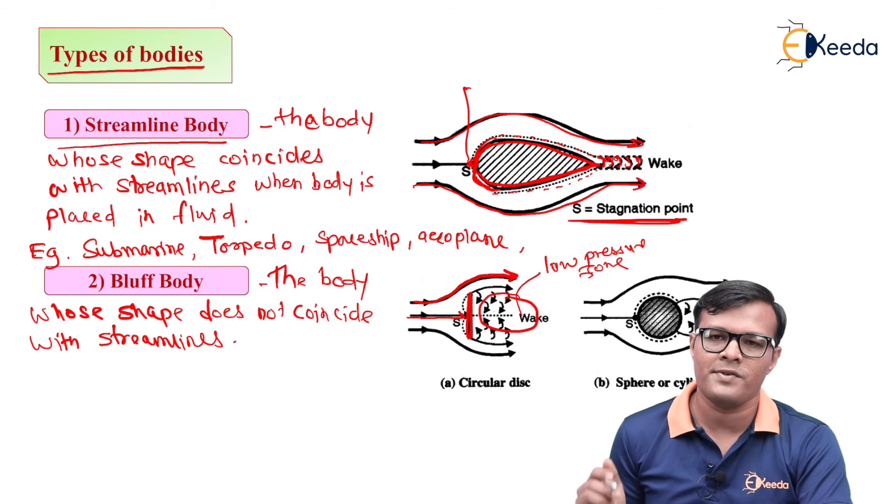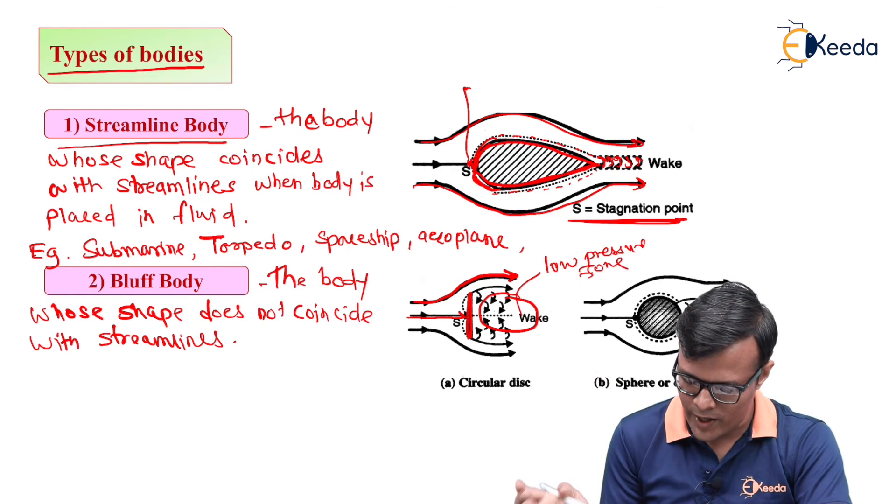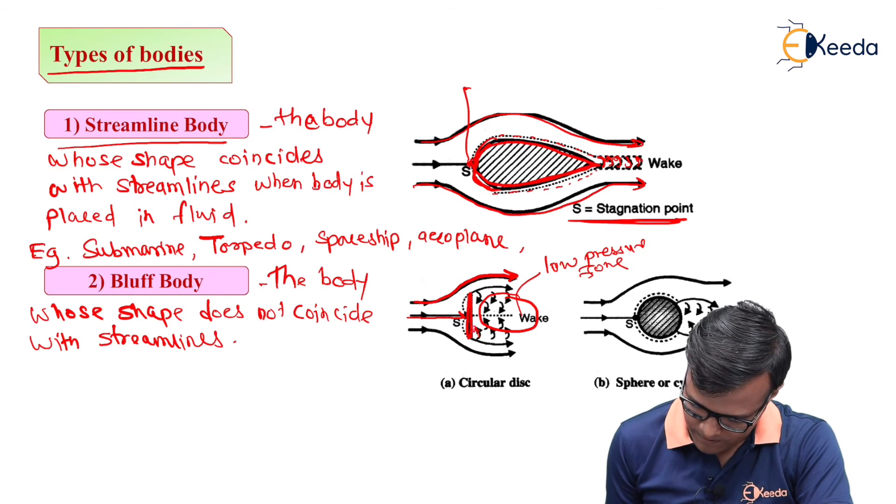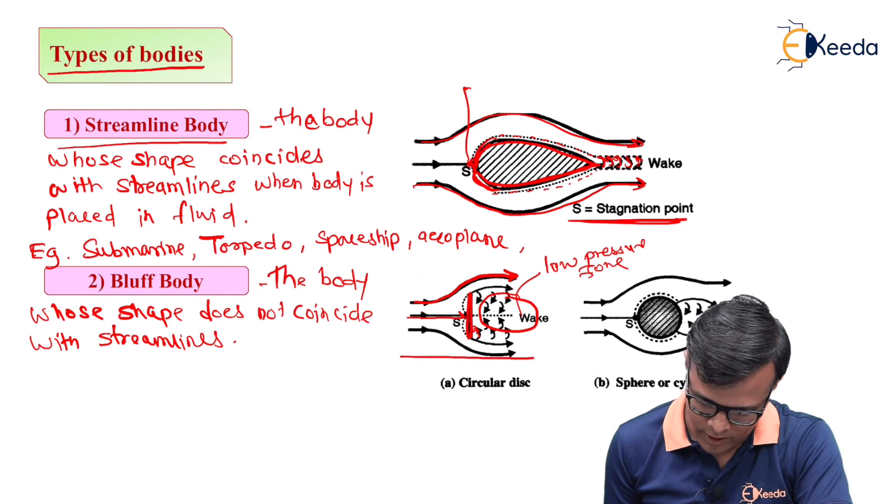So in this zone, wakes will get generated. So these are the directions of wakes in case of that circular disk.